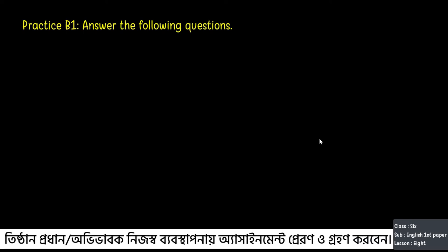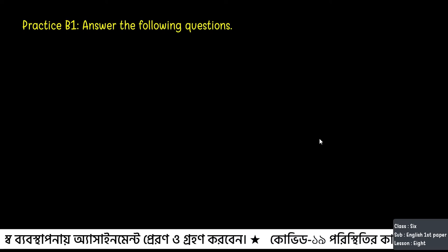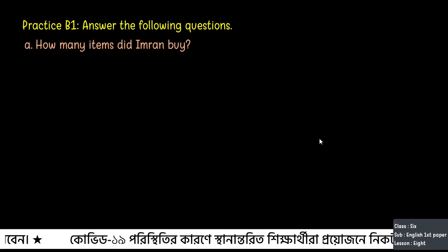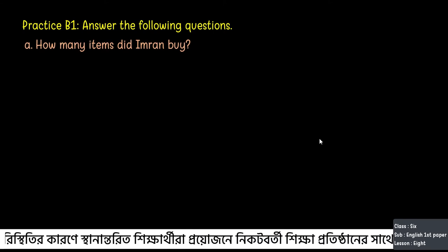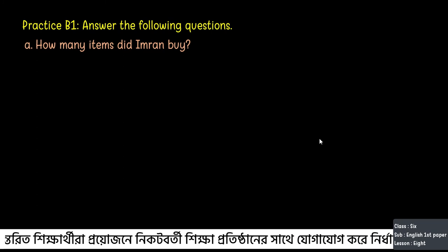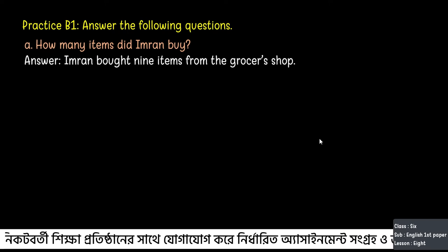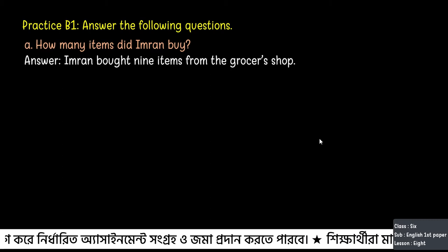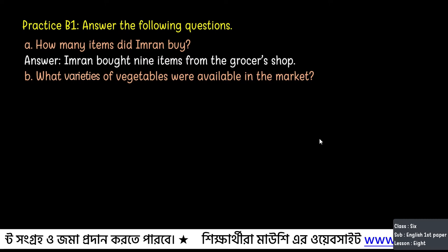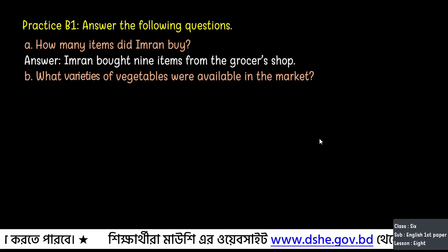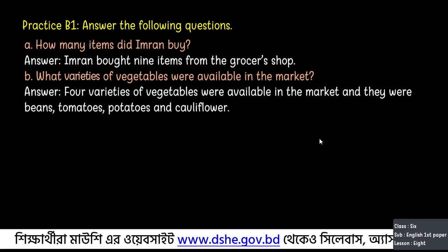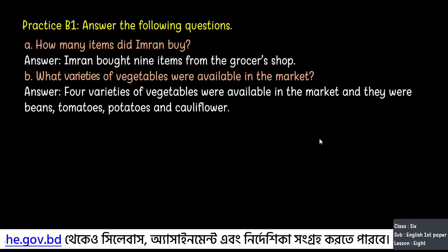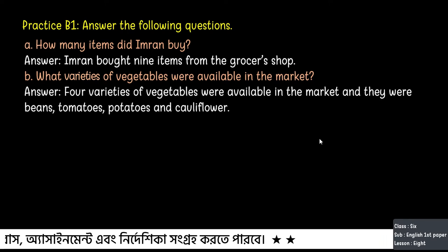Practice B1: Think about the conversations between Imran and the salesman and answer the following questions. Question A: How many items did Imran buy? The answer is: Imran bought nine items from the grocer's shop. Question B: What varieties of vegetables were available in the market? Four varieties of vegetables were available — beans, tomatoes, potatoes, and cauliflowers.